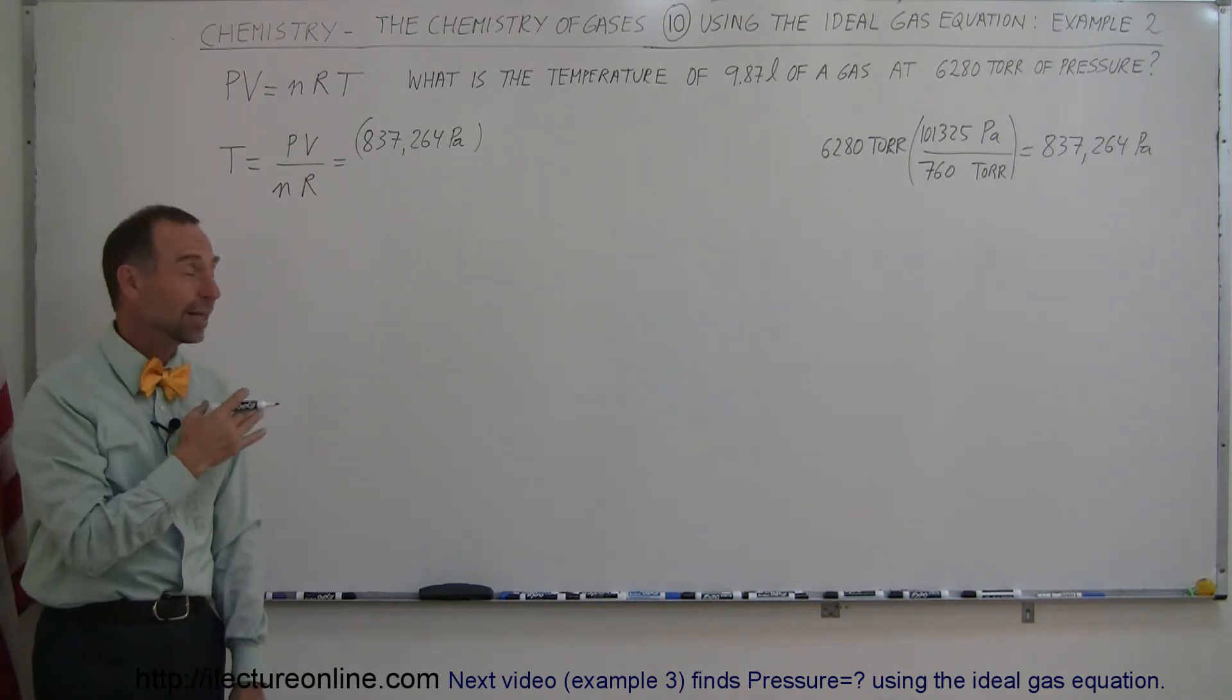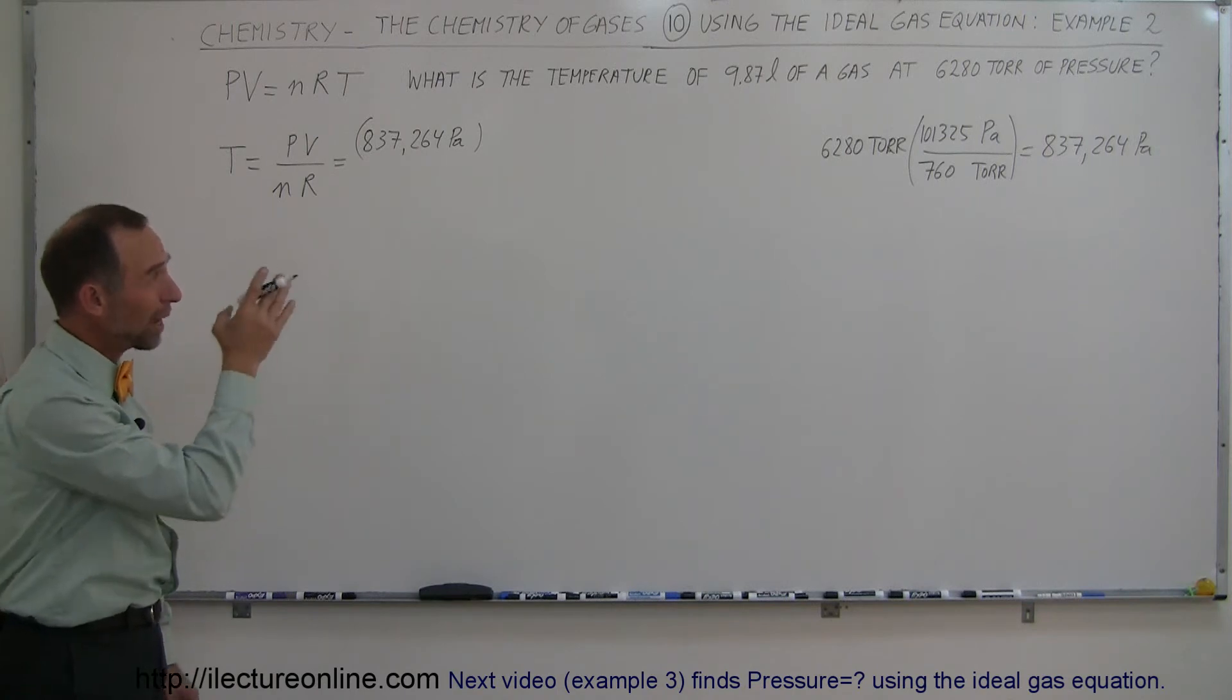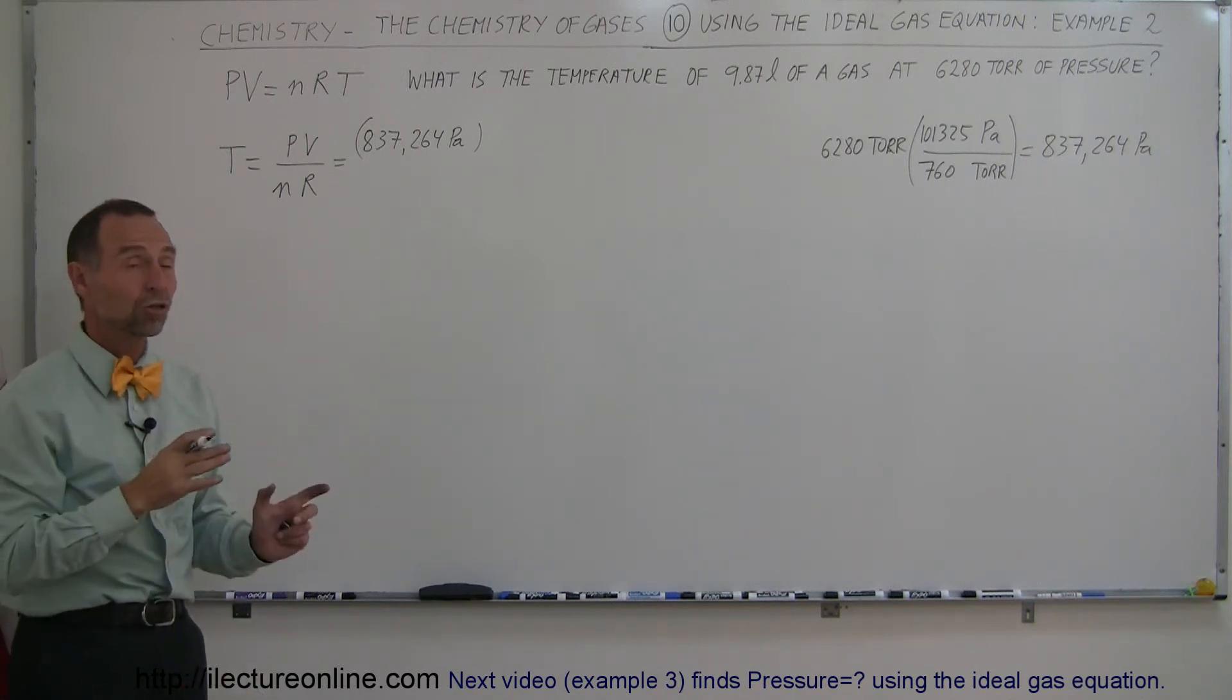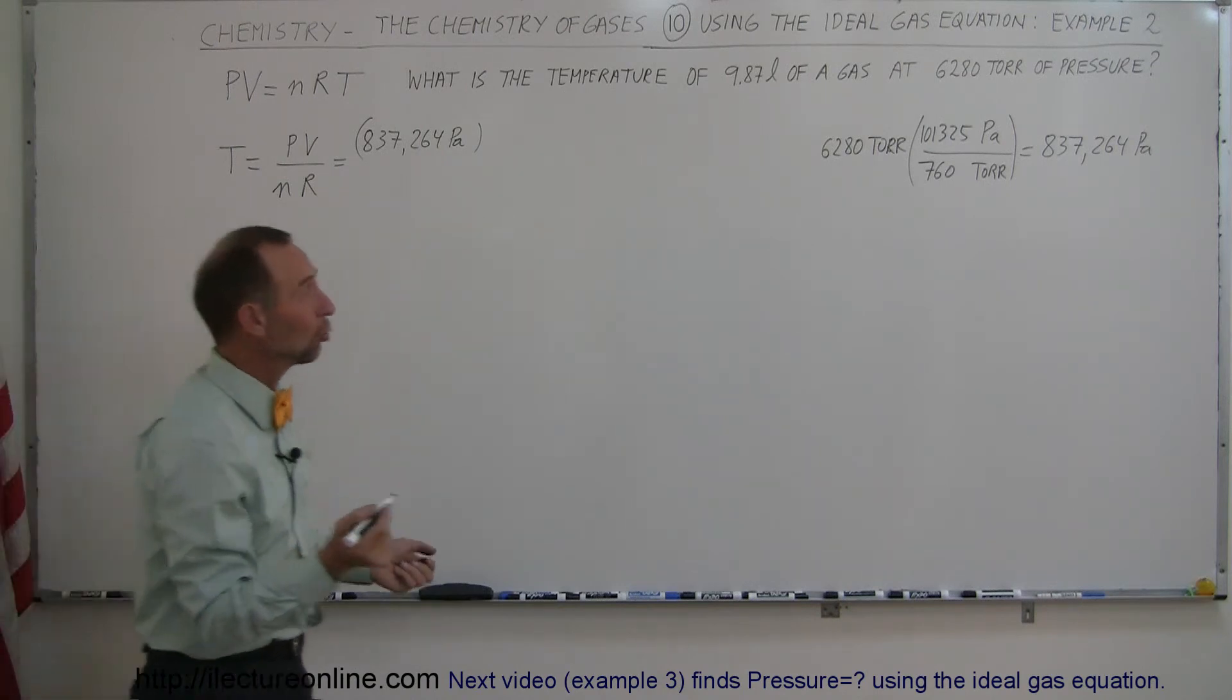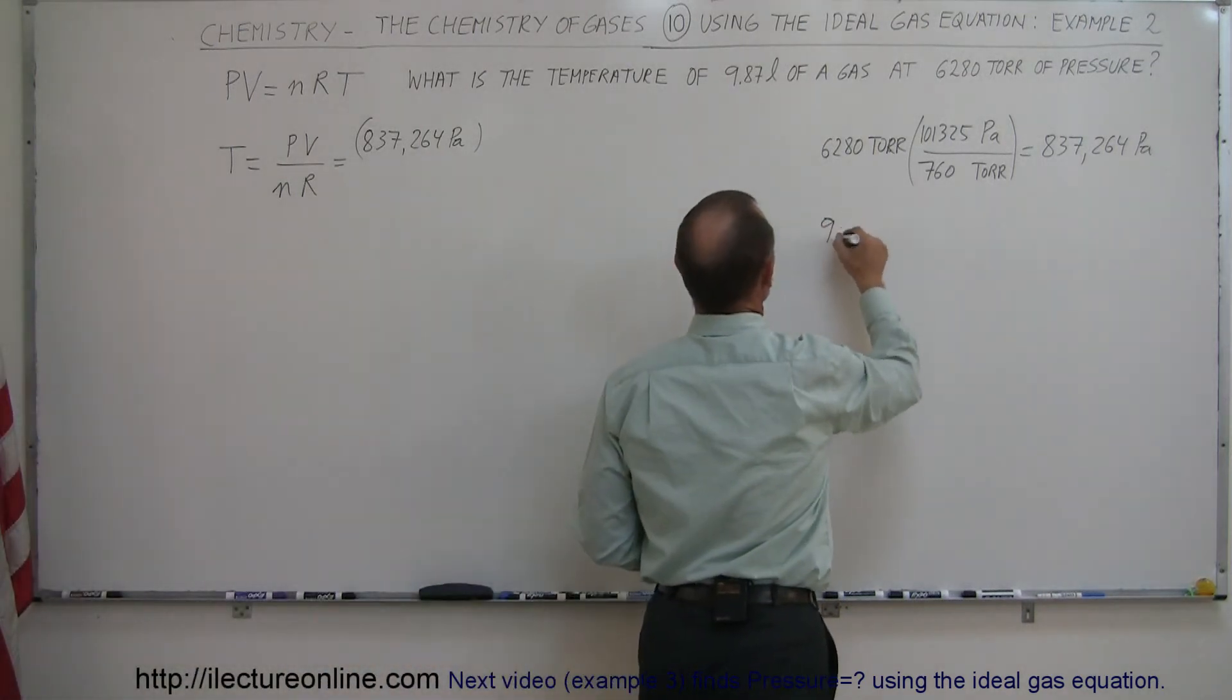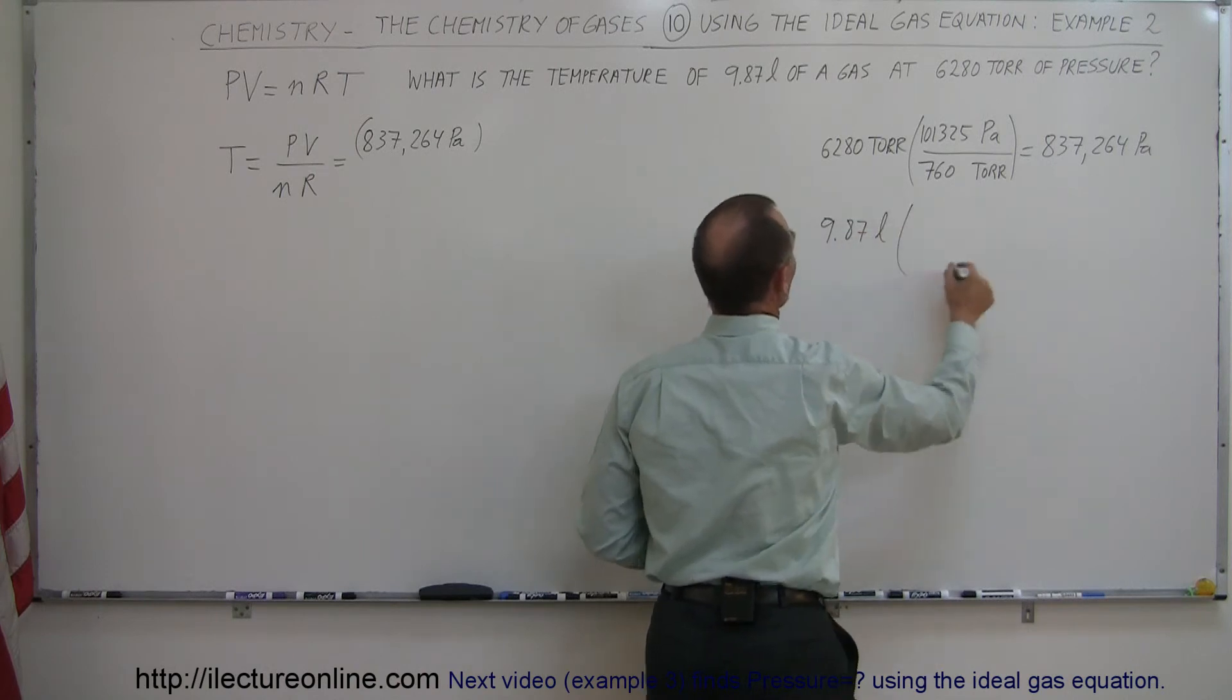The volume should go in the equation in terms of cubic meters, but we have it in terms of liters. The conversion is 1,000 liters per cubic meter, so we have to divide that number by 1,000 to get cubic meters, or 9.87 liters.